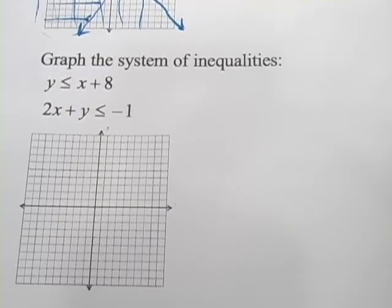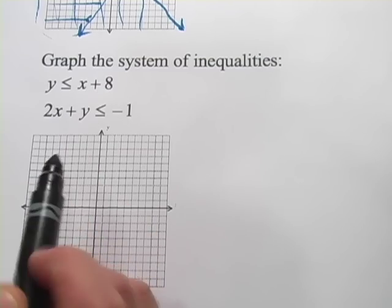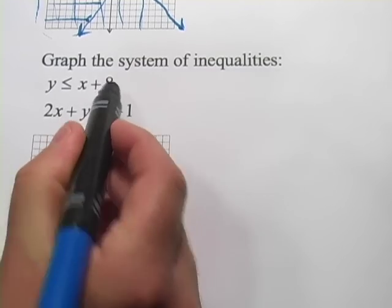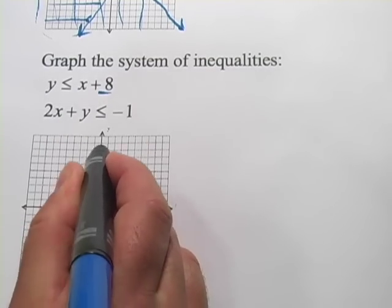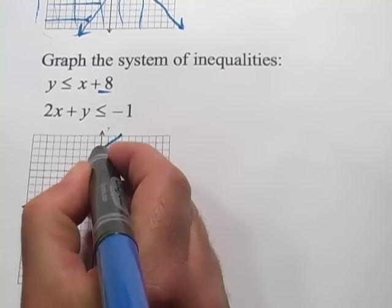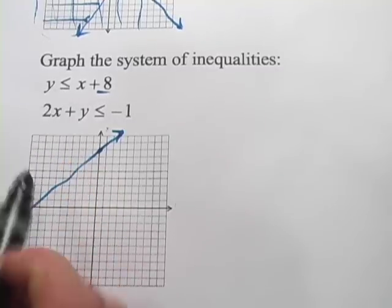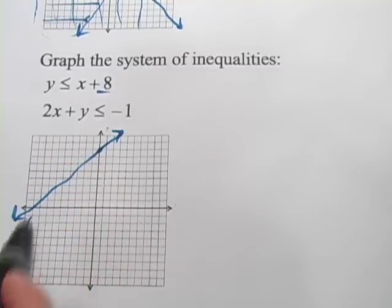Same thing, graph the system of inequalities. We've got y is less than or equal to x plus 8. So that's a y-intercept of 8: 4, 6, 8, and a slope of positive 1. So it's going to look something like that. And that's y is less than or equal to, so it's going to be the shaded area below.